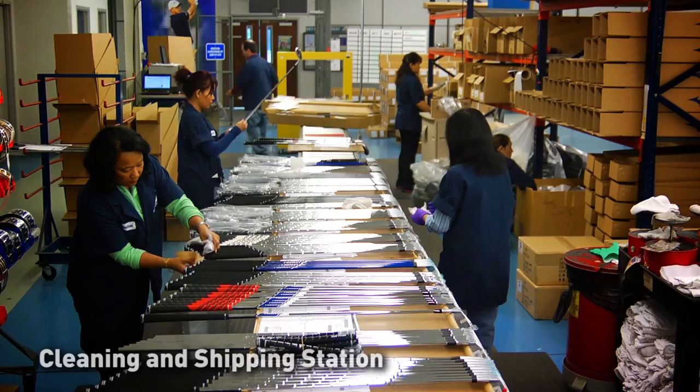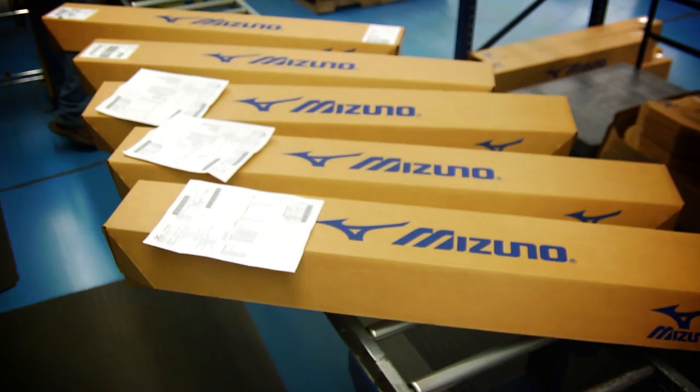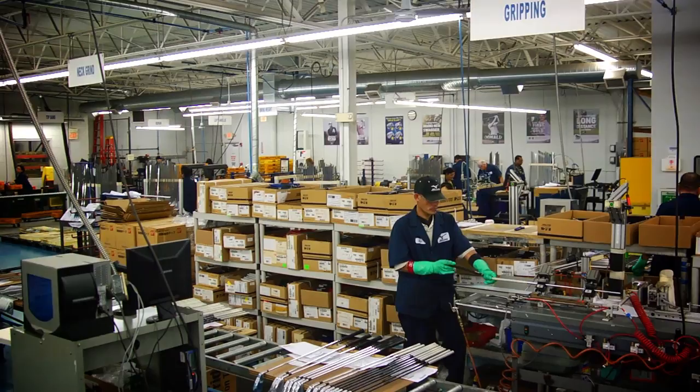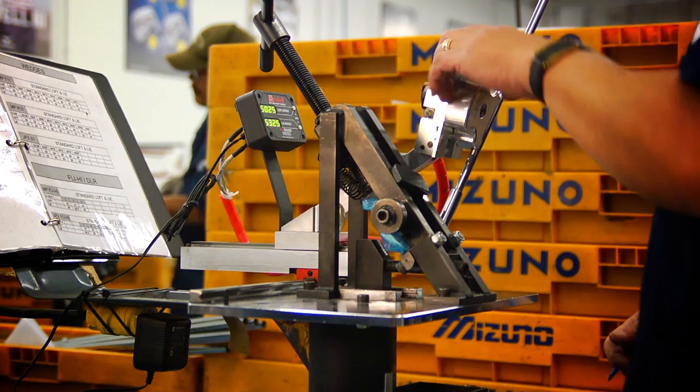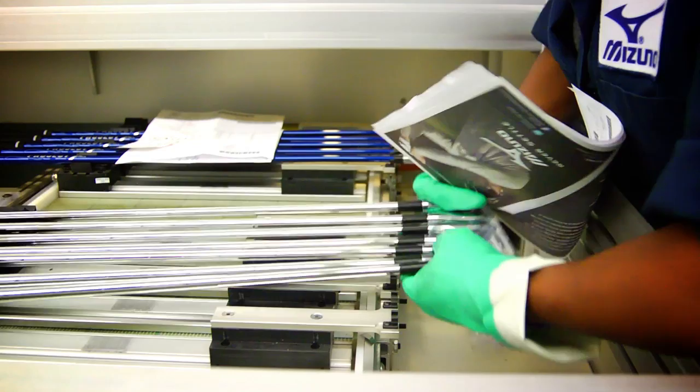Finally, your order moves along to our cleaning and shipping prep station. Each club goes through one final quality check, is cleaned, bagged, and boxed, and is now ready to be shipped. Being golfers ourselves, we know what it's like to wait on a brand new set. That's why Mizuno's industry-leading custom turnaround gets your order built and shipped to you within two business days to get you on the golf course with your new clubs in no time at all.